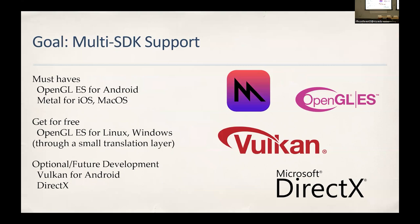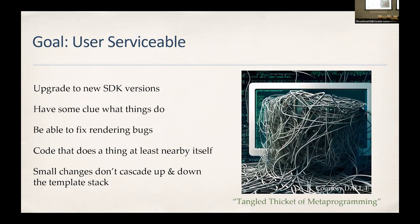One goal is multi-SDK support — meaning the rendering layer. We still have to support OpenGL ES for Android, Metal for iOS and macOS, and we get some Linux and Windows support through a translation layer. At some point you might want to support DirectX on Windows, and Android has its own transition from OpenGL to Vulkan, though that's a very slow transition. We want a structure where we can plug in Metal and others can add Vulkan, DirectX, or a better OpenGL implementation.